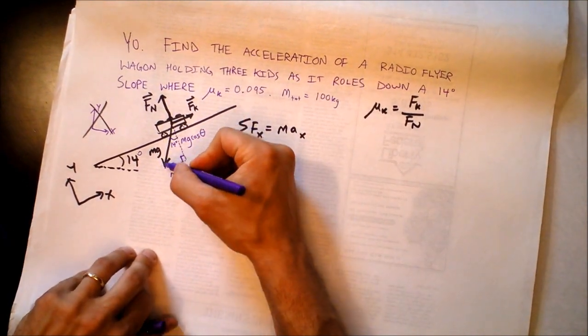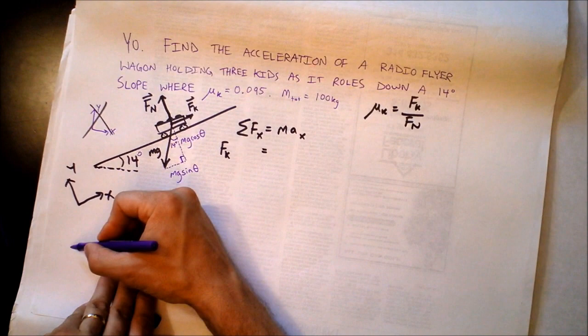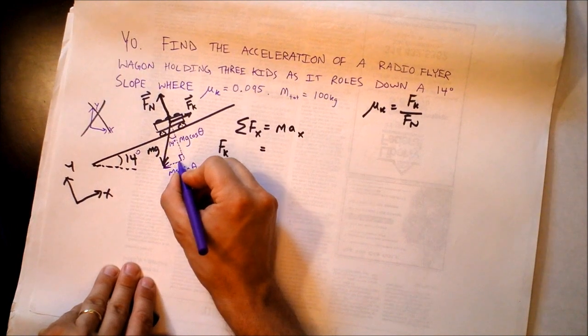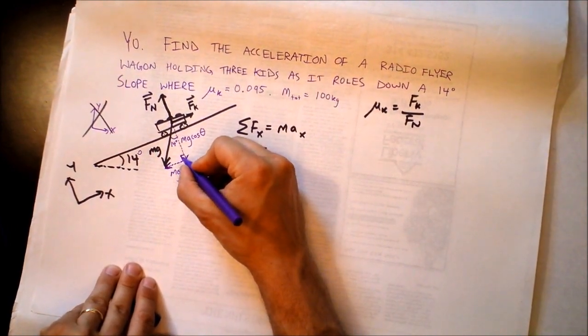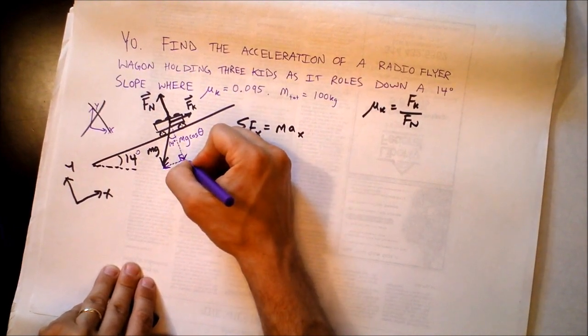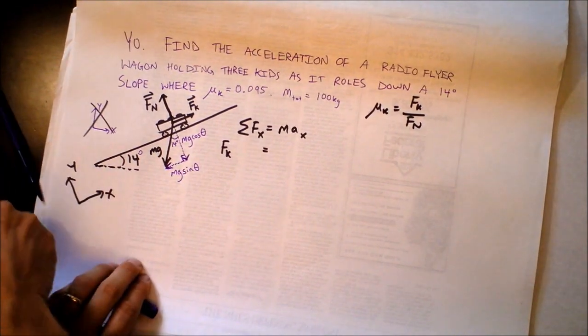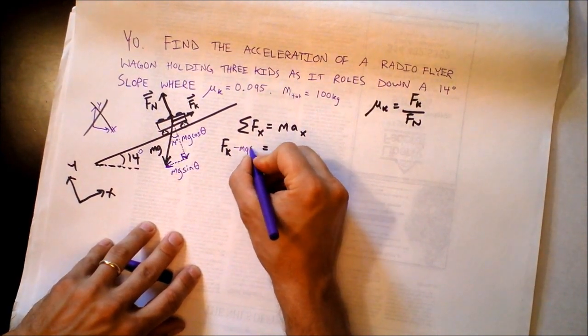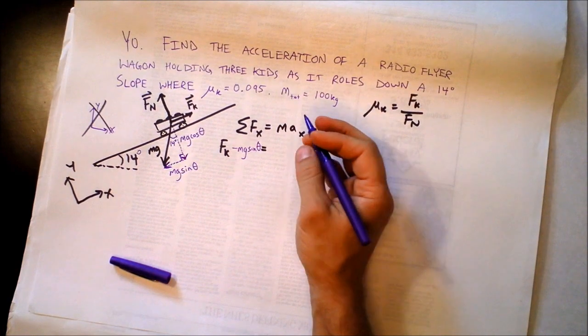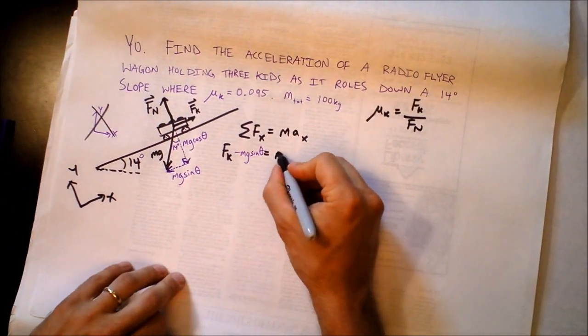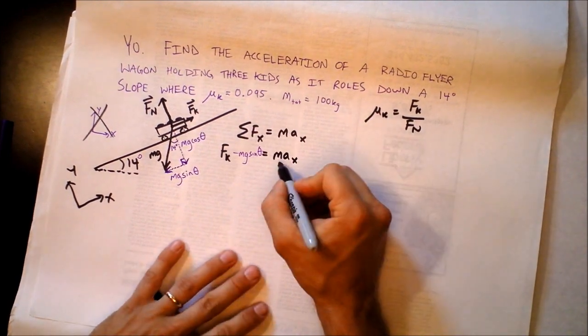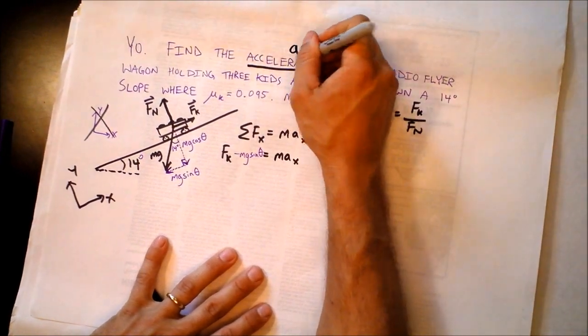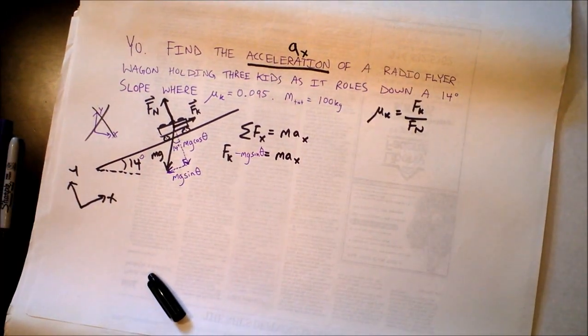And then there's also mg sine theta. This mg vector right here is going down. That component is to the left and this component is to the down. So we've got this in negative y and we've got this in negative x. So I'm going to say f sub k minus m times g times the sine of theta is the other x component. And that's just equal to m times a sub x. We're trying to find the acceleration in one direction and this will actually be a sub x. So this is our goal right here, to find a sub x.